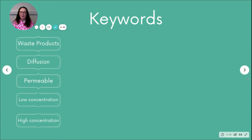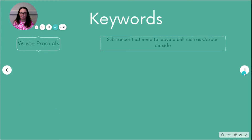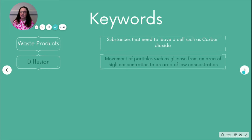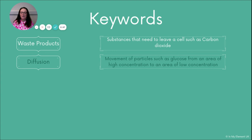The keywords you've got here are the ones you need to use to explain diffusion. Be clear that waste products are substances that need to leave the cell — an example of this could be carbon dioxide. Diffusion is the movement of particles such as glucose from an area of high concentration, where there is a lot, to an area of low concentration. When noting this down, if you think you might forget, next to 'high concentration' put in brackets 'lots' and next to 'low concentration' put in brackets 'not many' or 'few'.